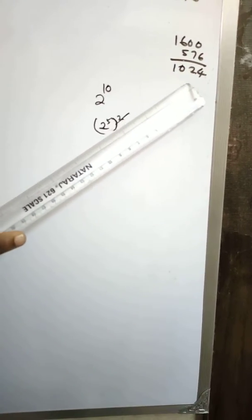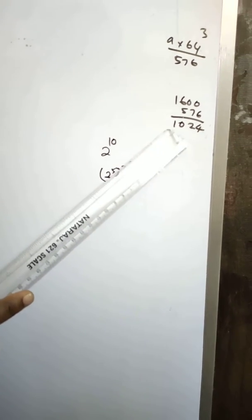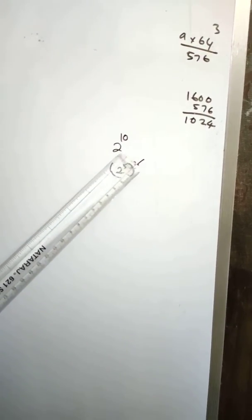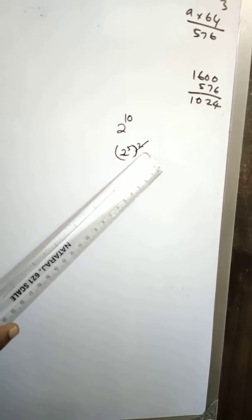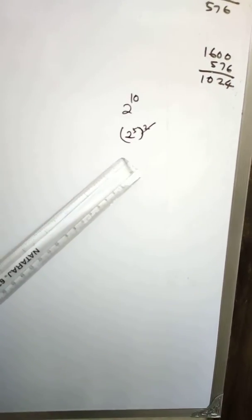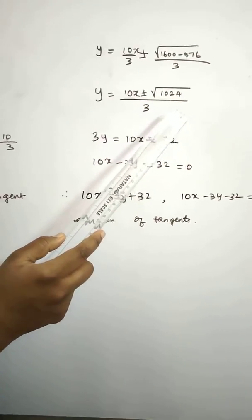1024 is 2 power 10, which is 2 power 5 whole squared. So square root gives 2 power 5, which is 32. So square root of 1024 is 32.